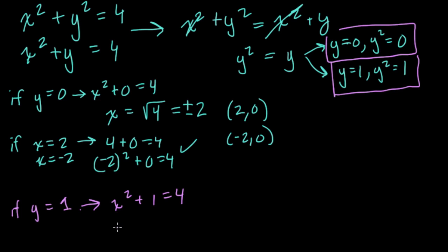Well, x squared plus 1 is equal to 4. And x squared is going to be equal to 3. We're subtracting 1 from both sides, and x equals the square root of 3. So now x could equal the positive or negative square root of 3.